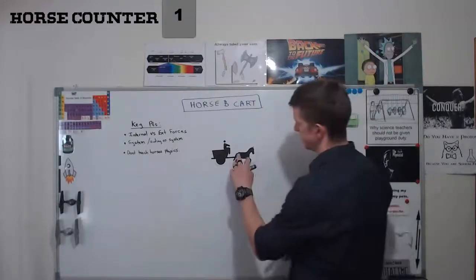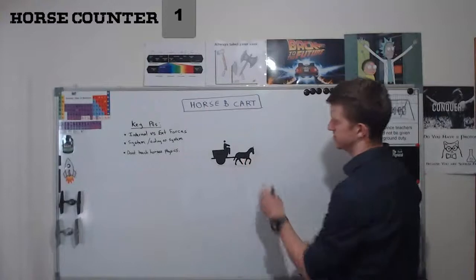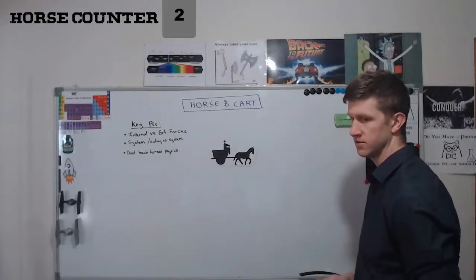The horse and cart problem goes a bit like this. We've got a super intelligent, genetically modified horse that we've taught Newton's laws.